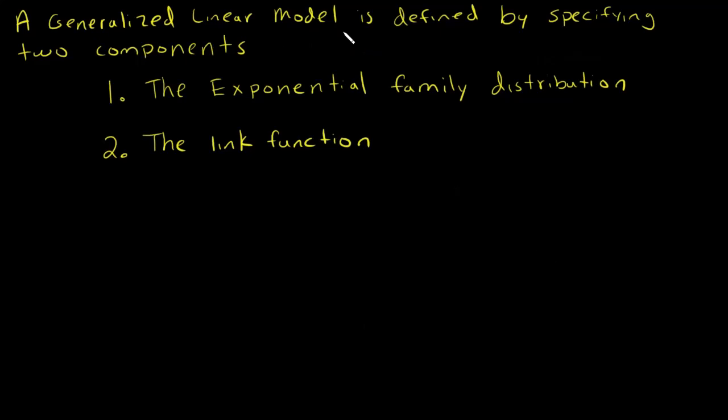Generalized linear models are defined by specifying two components. First, the exponential family distribution that the response variables are coming from, and then the second is the link function.